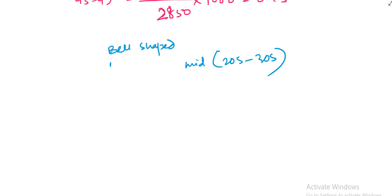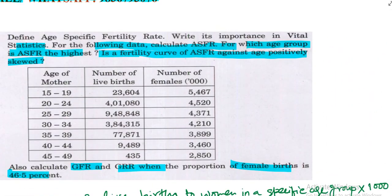So what is the GFR calculation? GFR means general fertility rate. The formula is total number of live births divided by number of women aged 15 to 49 into 1,000. So total number of live births after adding, the summation here...